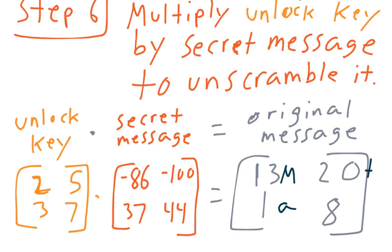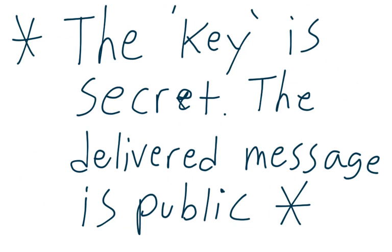So there's one example of how this encryption works. So something to keep in mind here, the key is going to be secret, the delivered message is going to be public, right? The person I give the message to, only he or she should have the key, okay? Let's look at one more example, and we'll be done. So, again, I'm going to use the same key as before.